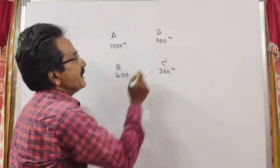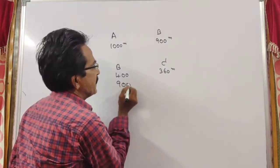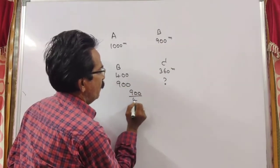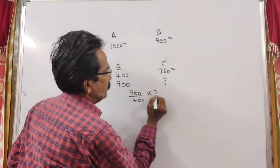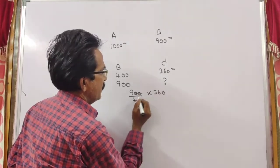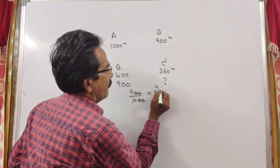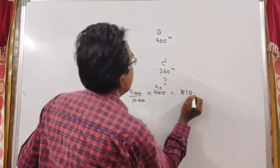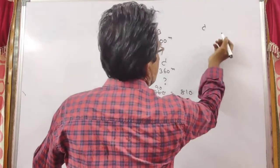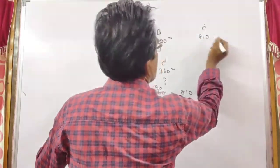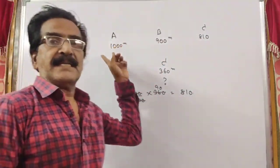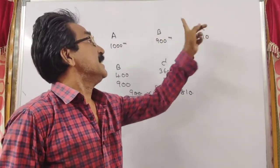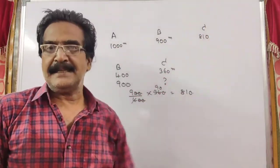If B runs 900 meters, C runs 900 divided by 400, multiplied by 360, which equals 810 meters. So if A runs 1000 meters, C runs 810 meters.